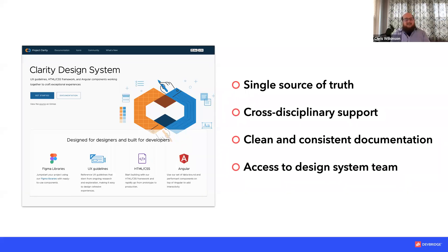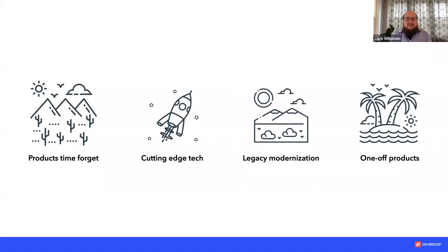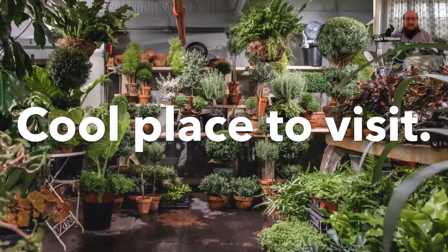When a design system is inside the context of a team or an application like Storybook, it's kind of in its own little greenhouse. But when a design system goes out into the world, there are a lot of different environments it has to survive and thrive in. By taking an adoption approach where you provide tools to the team and allow them to self-service as they adopt the design system, they'll have an easier time integrating it into the many different challenging environments they might face.